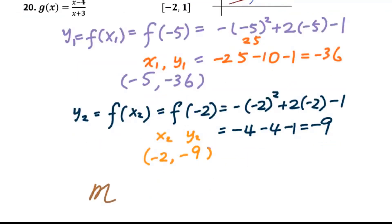So slope equals y2 minus y1 over x2 minus x1. Negative minus negative will be positive. So we got 27 over 3. That is 9. This is for number 19.